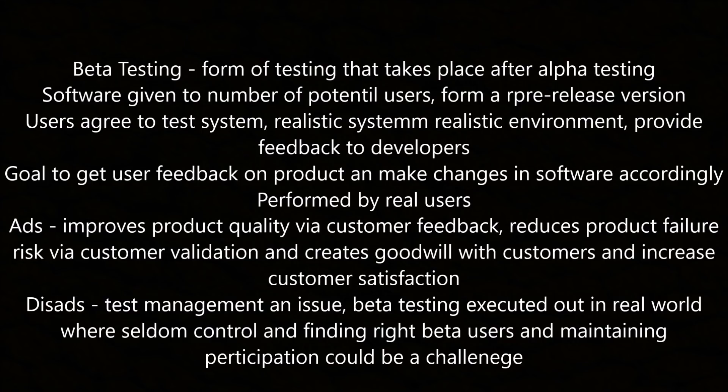Beta testing is a form of testing that takes place after alpha testing, and the software is given to a number of potential users forming a pre-release version. Users agree to test the system in a realistic environment, providing feedback to the developer. The goal is to get user feedback on the product and make changes accordingly. It's performed by real users. The advantage is that it improves product quality through customer feedback, reduces product failure risk via customer validation, and creates goodwill with customers. The disadvantage is that test management is an issue and finding the right beta users and maintaining participation could be a challenge.